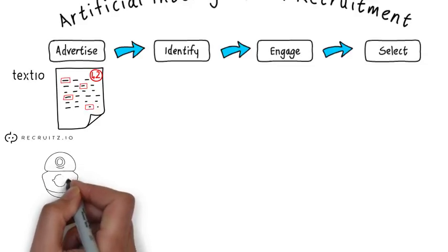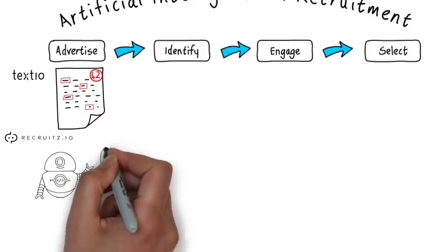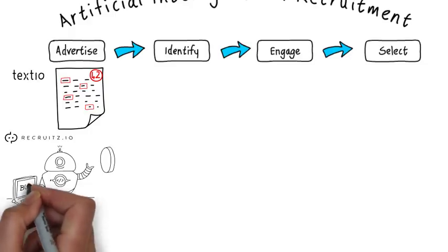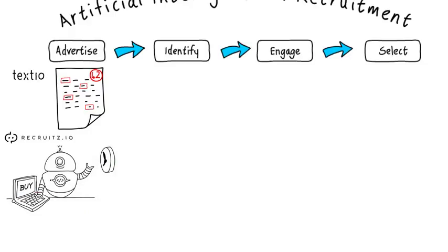Recruits.io is a job ad publishing tool that uses AI to determine the best online channels on which to programmatically buy advertising space, and also chooses the best time to publish your ad based on the evidence it has collected when your target audience is active online.